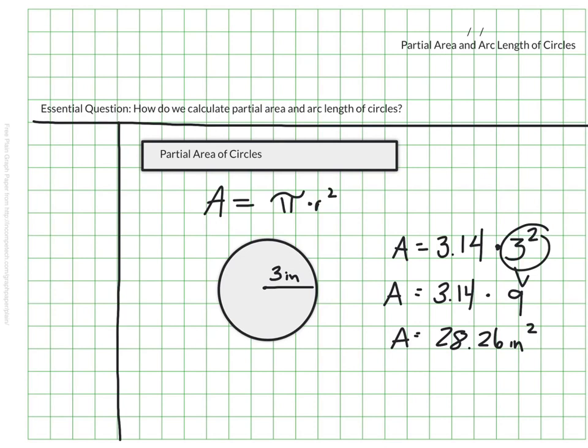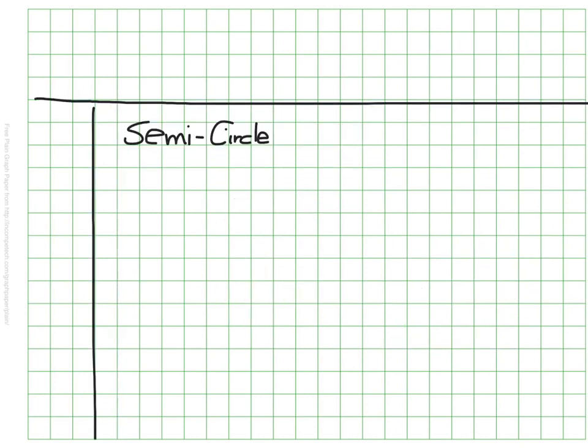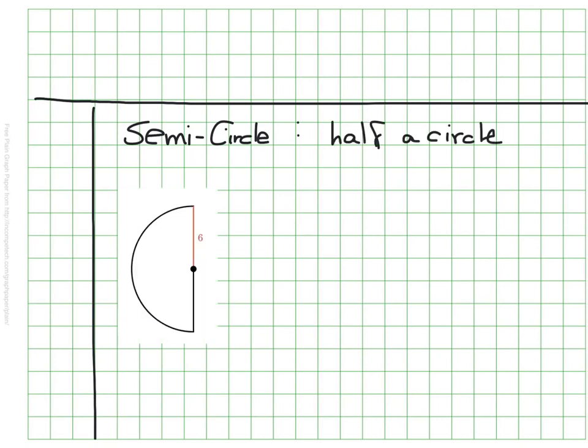So that's kind of the standard way we approach normal circles. But sometimes we come across circular objects in the world and we don't need to know the entire space of the circle. So let's look at a semicircle, which is just a fancy way of saying half a circle. This would be an example of a semicircle. Only half the circle is actually on this image. We only need to know the area of half of the size of a circle.